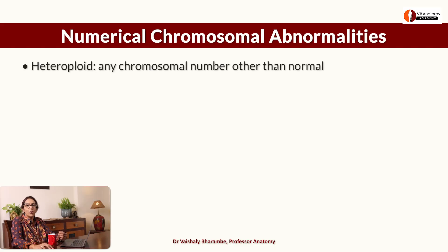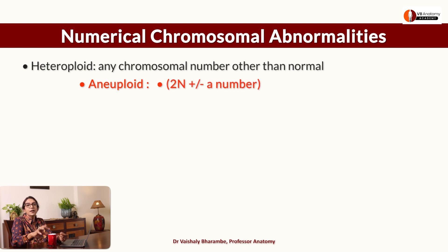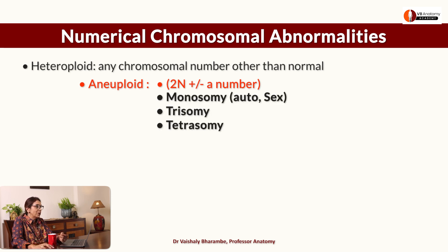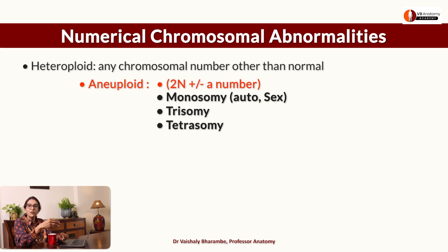What are numerical chromosomal abnormalities? Heteroploid means any chromosomal number other than normal. If the number of chromosomes is increased or decreased by 1, 2, or 3 — we call it aneuploid. So 2n plus 1 (trisomy), plus 2 (tetrasomy), or minus 1 (monosomy) are aneuploid. But if you have whole multiples of the haploid number — 3n, 4n — you call it polyploid: triploid, tetraploid, and so on.